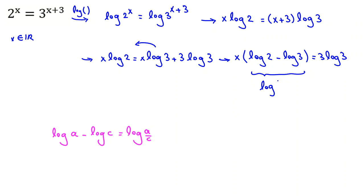Log 2 minus log 3 will be, by this rule, log of 2 over 3. So if we divide both sides by log 2 over 3, x will be 3 log 3 all over log of 2 over 3. And this is our answer.